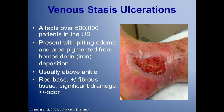Venous stasis ulcerations affect close to half a million people in the U.S. Much different presentation than your ischemic-type lesions — usually presenting with a granular, beefy base. They can be painful, and a lot of times don't require surgical management. Good local wound care and compression therapy can help manage these wounds.